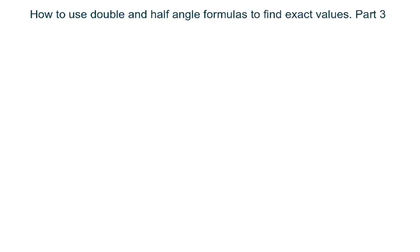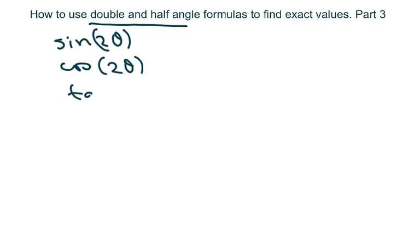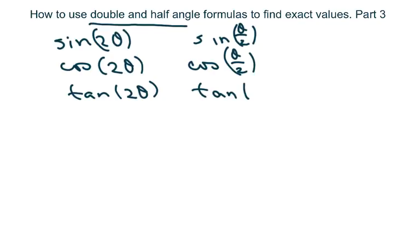Hey everyone, we're going to use double and half angle formulas to find exact values. We need to find sine of 2 theta, cosine of 2 theta, tan of 2 theta, and also sine of theta over 2, cosine of theta over 2, and tan of theta over 2.